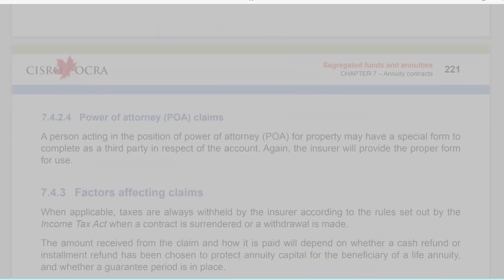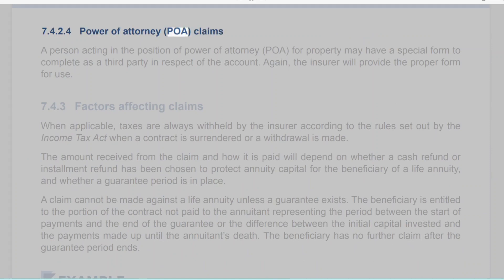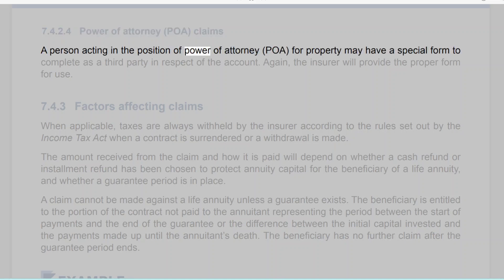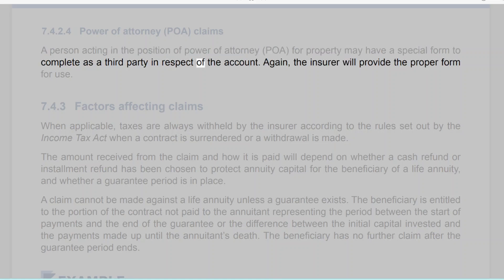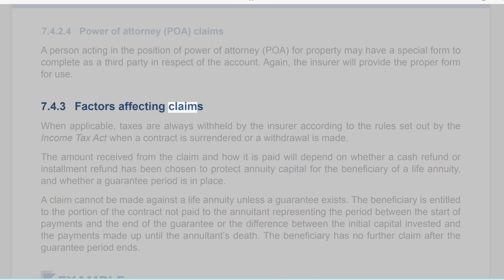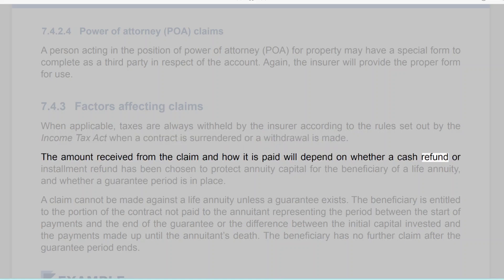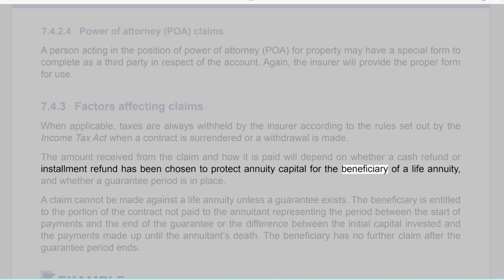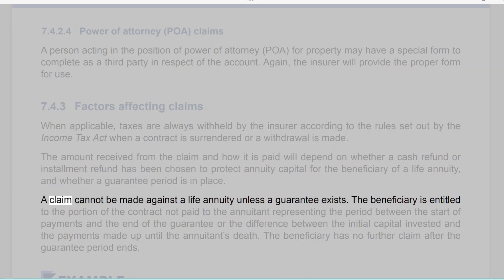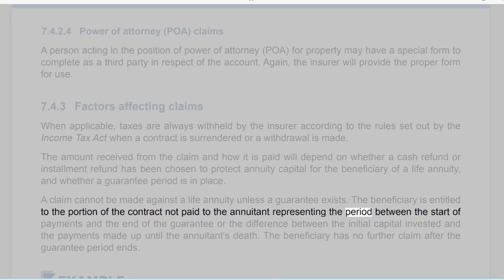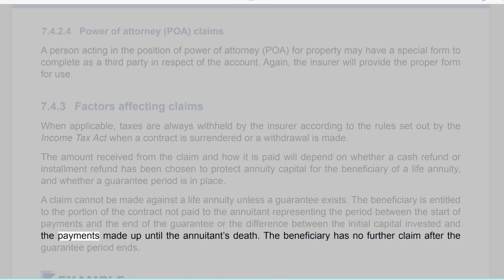Section 7.4.2.4: Power of attorney (POA) claims. A person acting as POA for property may have a special form to complete as a third party in respect of the account; the insurer will provide the proper form. Section 7.4.3: Factors affecting claims. When applicable, taxes are always withheld by the insurer according to the Income Tax Act when a contract is surrendered or a withdrawal is made. The amount received and how it is paid depends on whether a cash refund or installment refund has been chosen, and whether a guarantee period is in place. A claim cannot be made against a life annuity unless a guarantee exists; the beneficiary is entitled only to the unpaid guaranteed portion, with no further claim after the guarantee period ends.